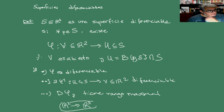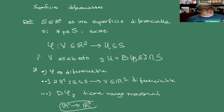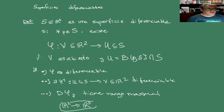Con rango 2, su imagen va a ser un plano, al cual vamos a llamarle plano tangente; eso vamos a verlo un poquito más adelante. Y la idea es que tengamos una cubierta con estos abiertos, una cubierta para toda la superficie.